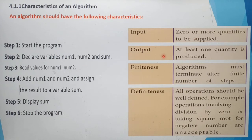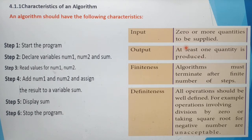The second characteristic is output. In output, at least one quantity is produced. In input you may not have any input, but output must have at least one quantity produced. In this algorithm, sum is the output. Num1 and num2 are the two input values and sum is the output.